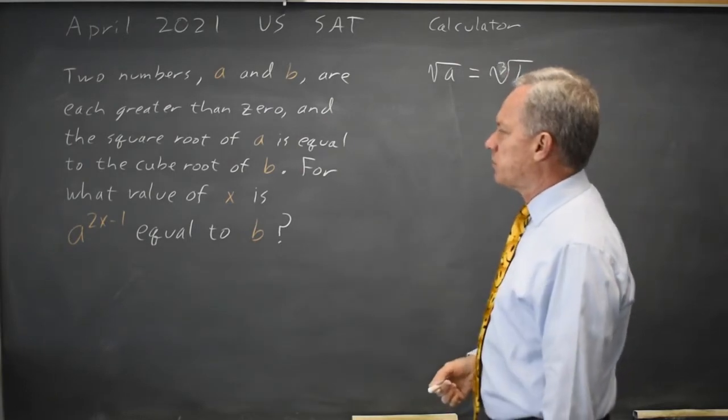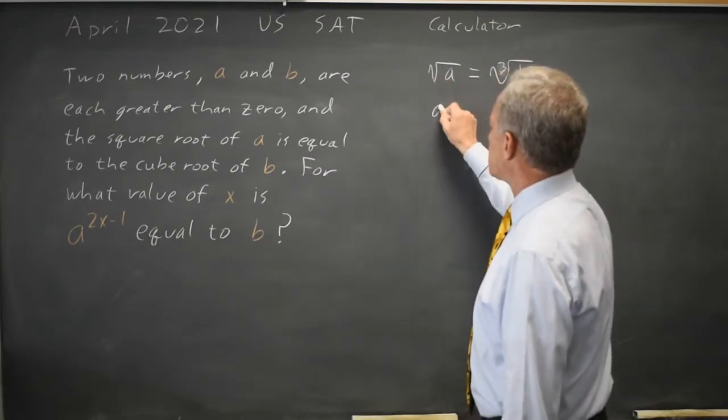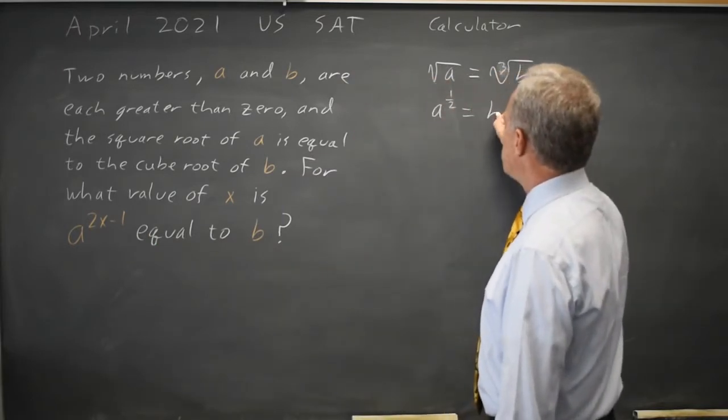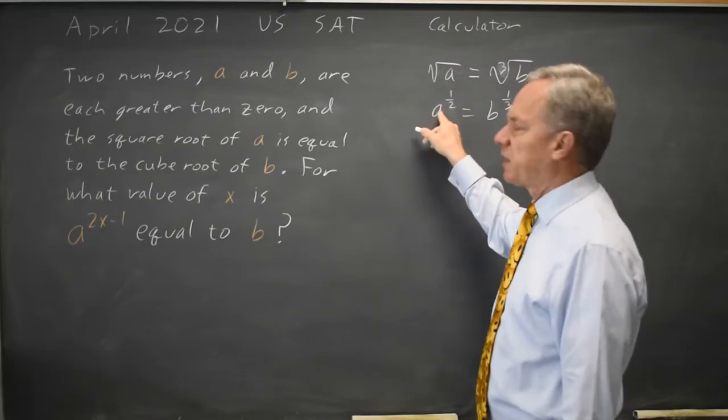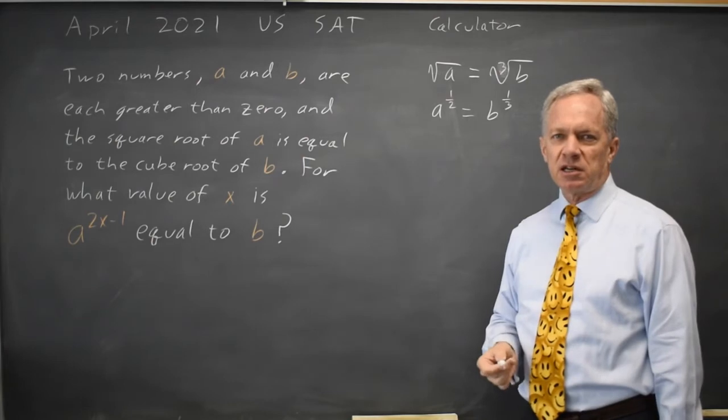But then they want us to write in exponent form to work with this. So I'm going to write that as A to the one-half equals B to the one-third. Because the square root is one-half power, a cube root is one-third power. And that is something that you will occasionally need for the SAT.